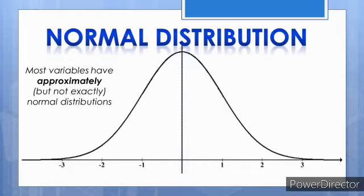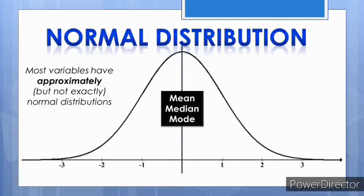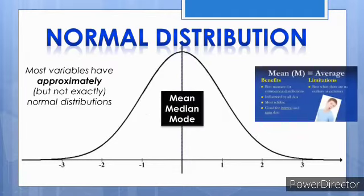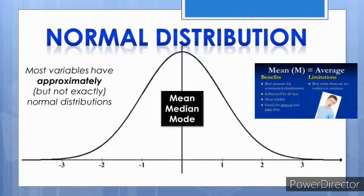Normal distributions measure central tendency: the mean, median, and mode all fall at the same midline point — that is, the mean, median, and mode are all equal. The calculation of these measures of central tendency are covered in another video.